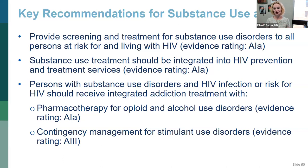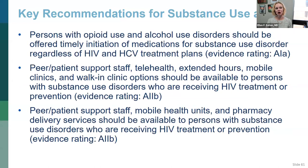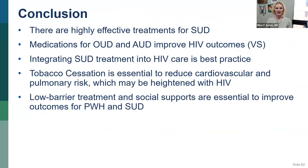If you don't have access to contingency management funding — as in my state — get creative: you can extend the period between visits as an incentive. If a patient has been doing well, tell them you'll see them in two weeks, then a month, then three months. Persons with opioid and alcohol use disorder should be offered timely initiation of meds — we talk about rapid ART for HIV, and we should think about rapid buprenorphine and rapid methadone as well. Think about peer support, telehealth, mobile units, and walk-in clinics. Meds for opioid use and alcohol use improve HIV outcomes — they are highly effective treatments for substance use.